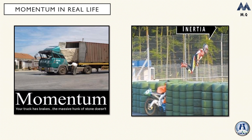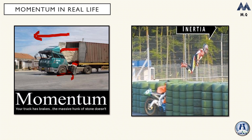Let's look at momentum in daily life. In the first example, both the truck and the load inside were moving in the same direction. When the truck applied the brakes, the momentum of the truck was reduced. However, no sufficient force was applied to the stone inside — the friction between the stone and the truck floor was not enough to change its momentum — so the stone kept traveling with the same momentum.